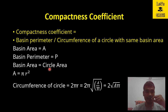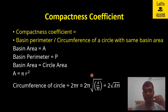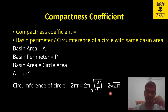When basin area equals circle area, basin area is A. If we assume a circle of radius r, the circle area is π r². The circumference of that circle is 2πr. The value of r can be determined as r = √(A/π). Substituting this value and simplifying, the circumference comes out to be 2√(A/π), which is the circumference of a circle having the same area as the basin.